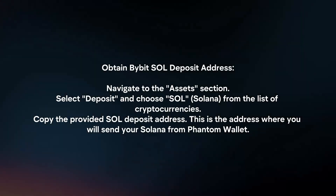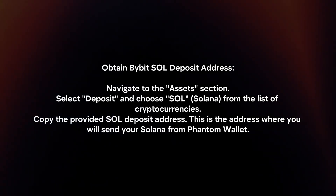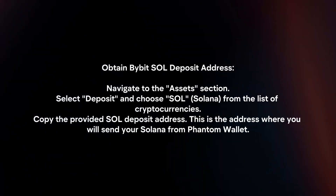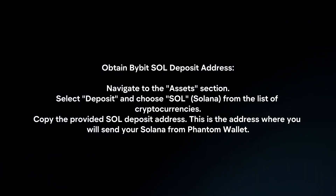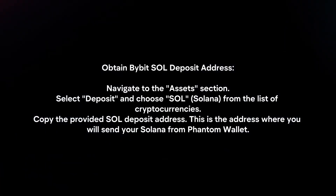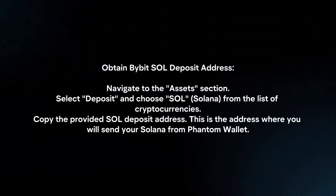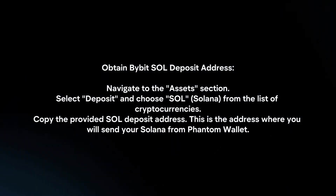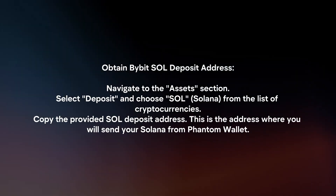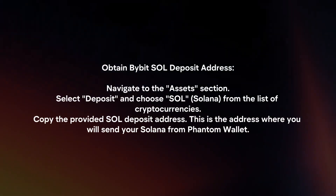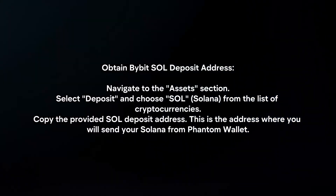Obtain your Bibit SOL deposit address. Navigate to the Asset section, select Deposit, and choose SOL from the list of cryptocurrencies. Copy the provided SOL deposit address — this is the address where you will send your Solana from Phantom Wallet.